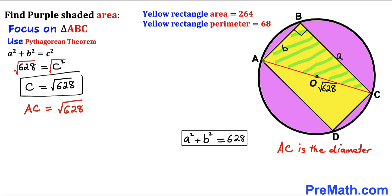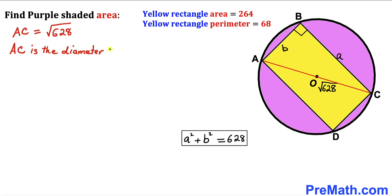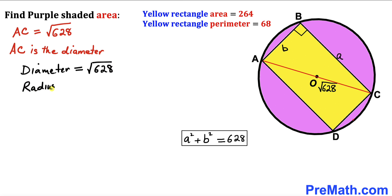So the length AC turns out to be the square root of 628. Since AC is the diameter of the circle, the diameter equals √628. Therefore the radius r equals half of the diameter, which is √628 divided by 2.